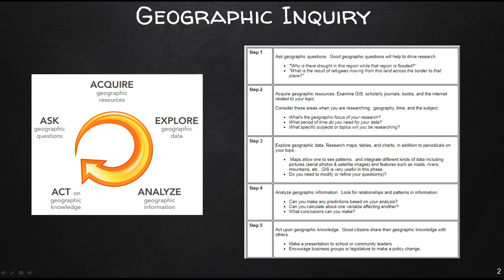Step four, you want to analyze geographic information. Look for relationships and patterns in the information. For example, we looked at these relationships and patterns in the way people voted. We also looked at spatial patterns with the John Snow map.